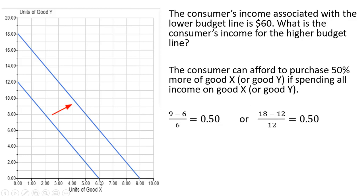In other words, the horizontal intercept increased by 50%. Going from 6 to 9 is a 50% increase, and likewise going from 12 to 18 is also a 50% increase. Therefore, income increased by 50% to $90, since 1.5 times 60 equals $90.